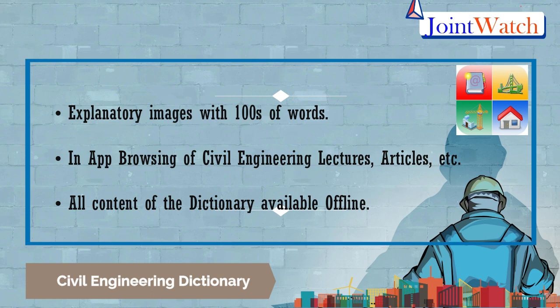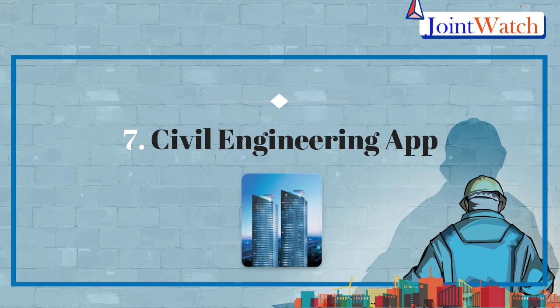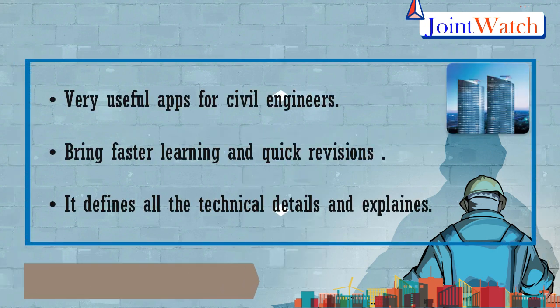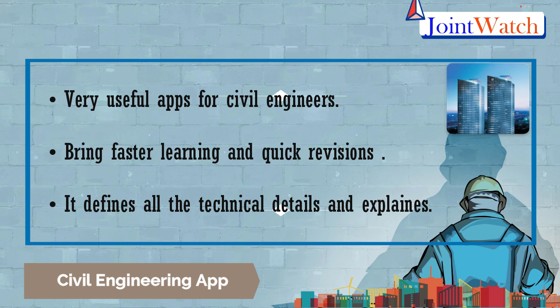Features of the Civil Engineering Dictionary include explanatory images for hundreds of words, browsing of civil engineering lectures and articles, and all content available offline. Seventh is the Civil Engineering App, one of the most useful apps for civil engineers. Its main objective is to bring faster learning and quick revision of subjects, helping in exams and interviews. It defines all technical details and explains them according to the civil engineering field.